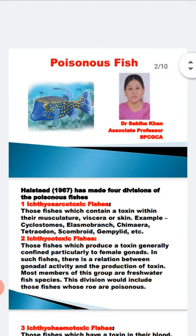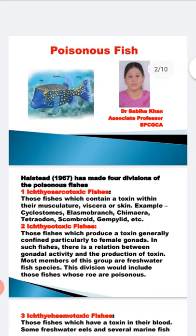The second category is the ichthyootoxic fish — fishes which produce a toxin that is confined to the female gonads. In such fishes, there is a relation between gonadal activity, and most members of this group are freshwater. This includes the fish's egg — the toxin is in the fish roe, that is the fish gonads.